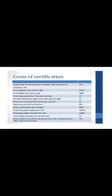The cost of certification: registration fee per gore per location per crop per season per unit is 25 rupees. Inspection fee for foundation class of crop: 350 rupees; certified class of all crops: 300 rupees. Processing supervision fees: 3 rupees per quintal. Packing and repacking supervision fees: 3 rupees per quintal. Reprocessing supervision fees: 5 rupees per quintal. Sampling and seed testing fees: 80 rupees. Growth test fees per sample: 300 rupees. Processing plant registration fees: 2000 rupees. Processing plant renewal fee per year: 1000 rupees. Cost of tag including lead seal: 3 rupees. Seed transfer fee per quintal if transferred from site of processing to other places for storage: 10 rupees. Maximum 4,000 rupees required for cost of certifications per crop per location.